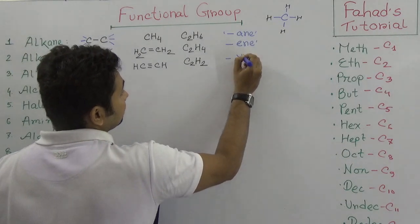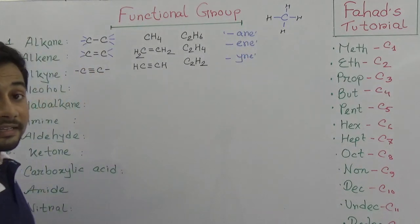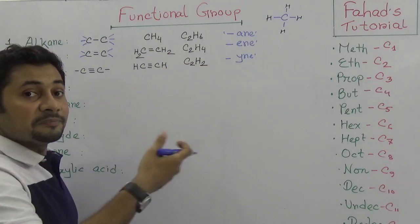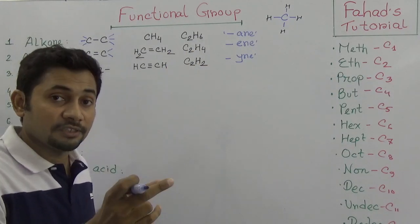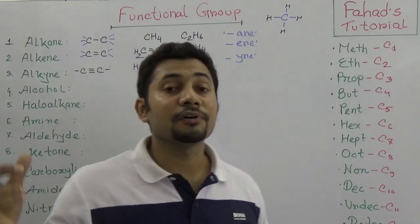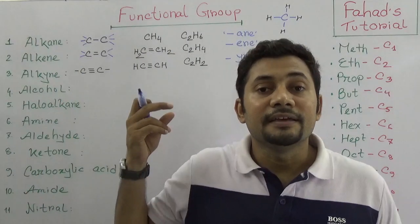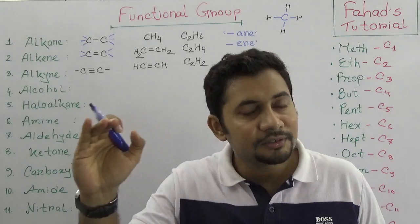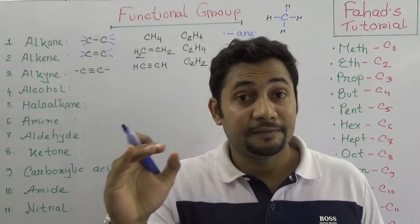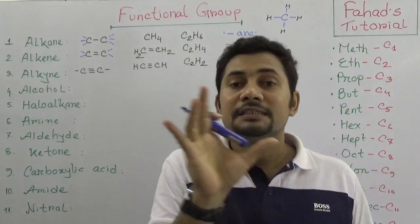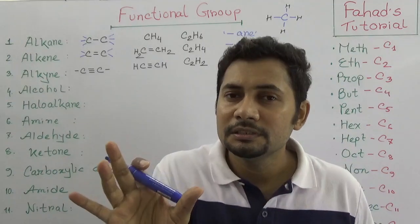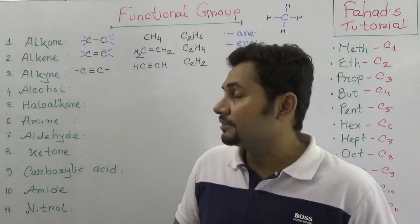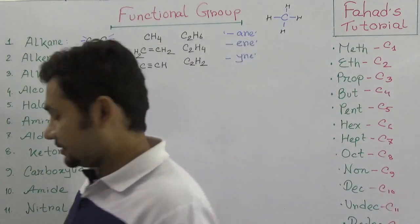So alkane, alkene, alkyne — it depends on the functional group. The functional group here is the nature of the bond: single bond gives alkane, double bond gives alkene, triple bond gives alkyne. After that we look at alcohols.